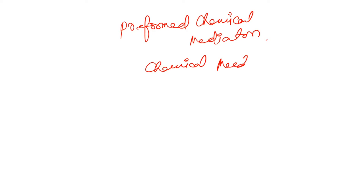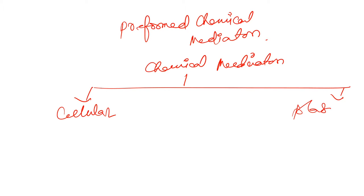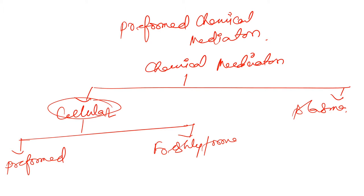So what are the chemical mediators? Chemical mediators which cause inflammation can be of two types. One can be cellular. This chemical mediators can be cellular or it can be from the plasma. Cellular again they are of two types. One is preformed, already present in cell, and freshly formed. They are formed during inflammation.